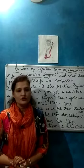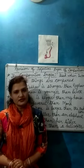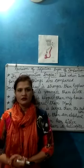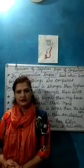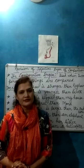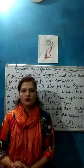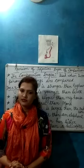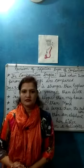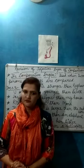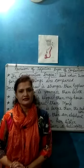We always use 'than' with the comparative degree of an adjective. To form the comparative degree, 'ER' is added to one-syllable adjectives. The word 'more' or 'less' is used with adjectives having three or more syllables. With two-syllable adjectives, 'ER' or the word 'more' or 'less' is used.